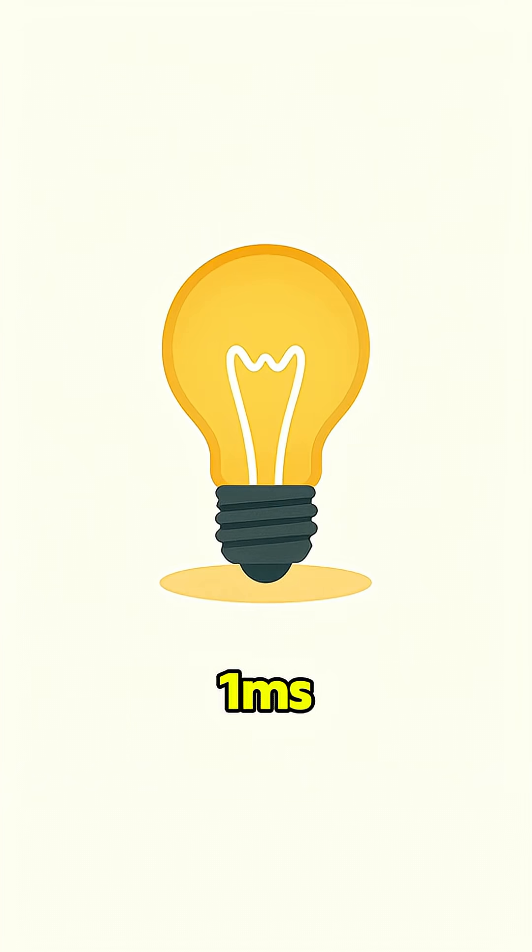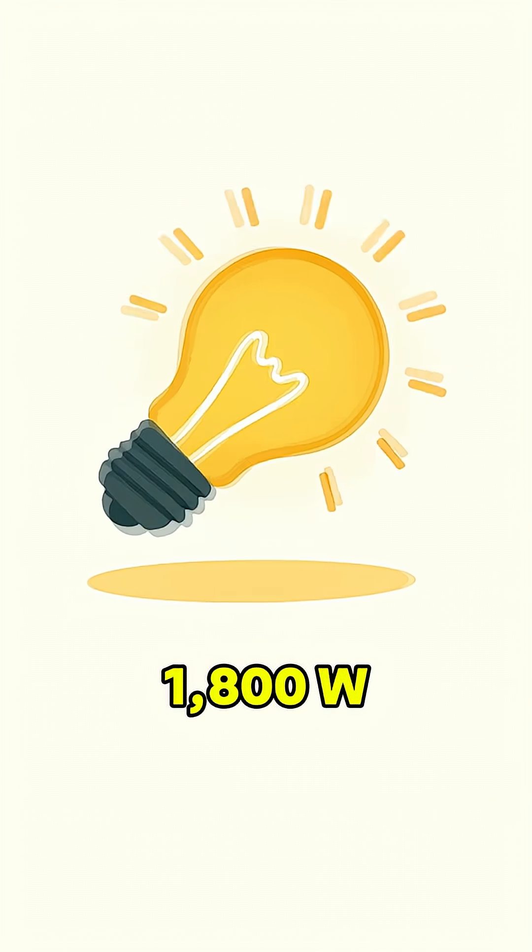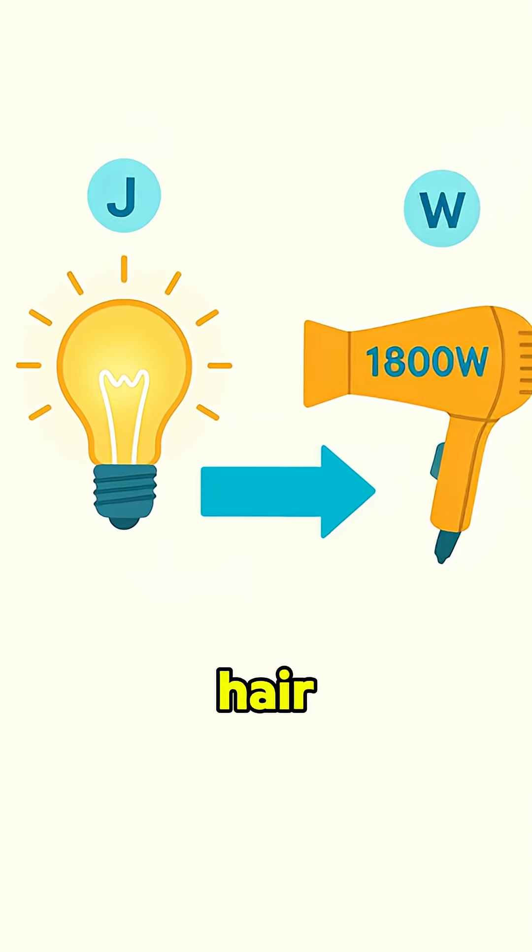To deliver one joule in just one millisecond, you'd need a burst power of about 1,800 watts, which is roughly the same as a hairdryer running at full power.